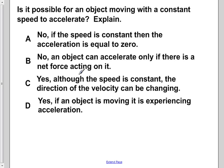Choice B says no — an object can accelerate only if there's a net force acting on it. However, this isn't really answering our question of whether an object can move with constant speed and still accelerate. It's just stating a condition for acceleration in general. We don't care about whether there's a net force; we want to know if constant speed is compatible with acceleration. So choice B also does not answer the question.